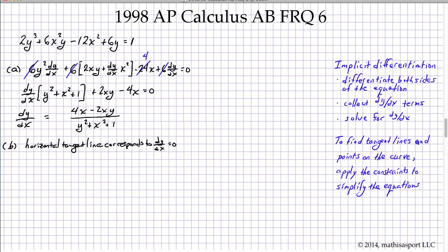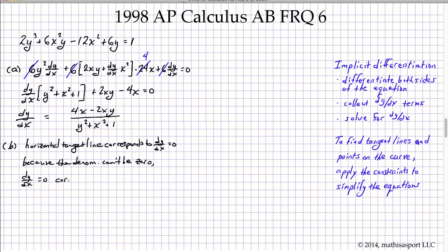We first want to make sure the denominator cannot be zero. Because we have a positive quantity, another positive quantity, and one, the denominator can never be zero. Since the denominator can't be zero, dy/dx equals zero corresponds solely to the numerator equaling zero. If the denominator could be zero we'd face an indeterminate case, but that's not an issue here. So we set the numerator to zero.